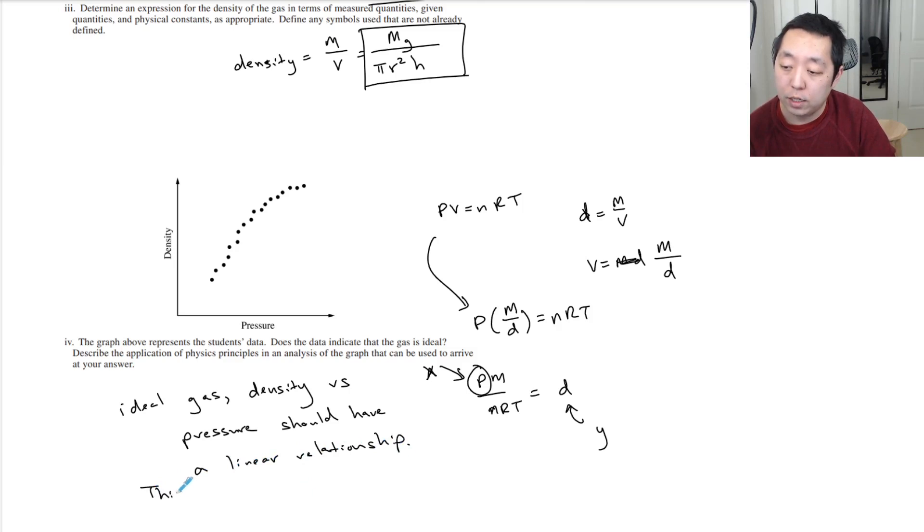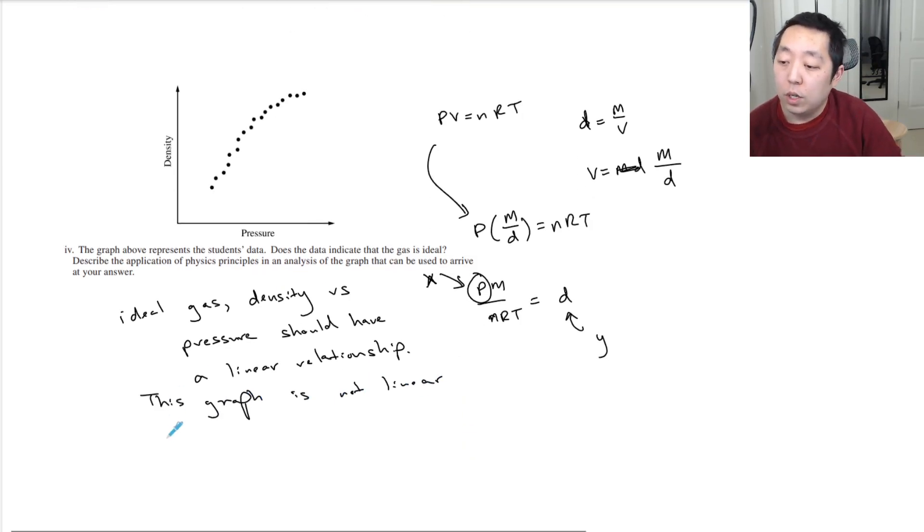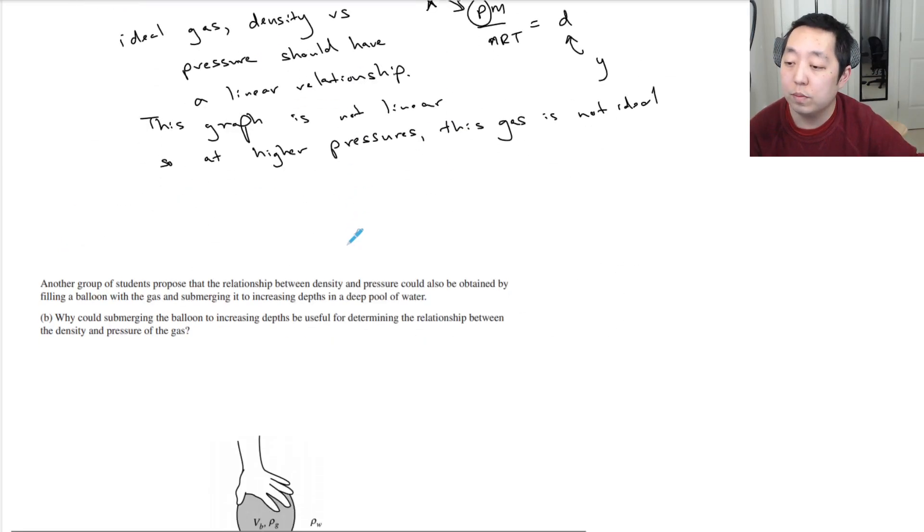This graph is not linear. So at higher pressures, it's not linear right around here. At higher pressures, this gas is not ideal. I'd make an argument that it's ideal for about this region, but then around here it starts to taper off.